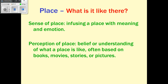Place means asking 'what is it like there?' — both the physical features like trees, rivers, and mountains, and the human-made features like roads, schools, malls, types of food, languages spoken, and clothing worn. Beyond that, we have the sense of place: we infuse a place with memories of what happened there, giving us an emotional association with it. Perception of a place can also be based not on memories specifically, but on what we've heard or read about it.